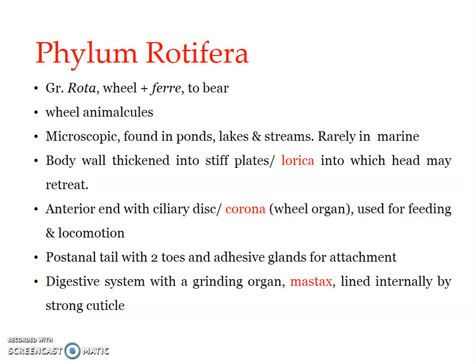Rotifers include microscopic animals found in ponds, lakes, and streams — that is, freshwater aquatic habitats — where they are found actively swimming. Very rarely we can find them in marine ecosystems such as seas. Most rotifers are benthic forms, meaning they are found along the bottom of aquatic habitats. But very few planktonic groups can be found as well.